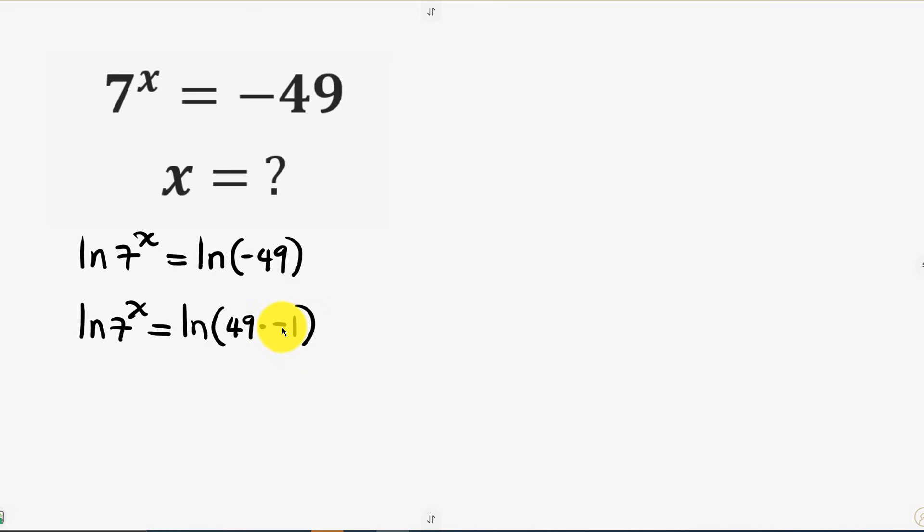For this negative 1, I'm going to be applying Euler's identity that says that negative 1 is equal to e to the power of pi i times 2k plus 1. So I'm going to be substituting this in place of negative 1.